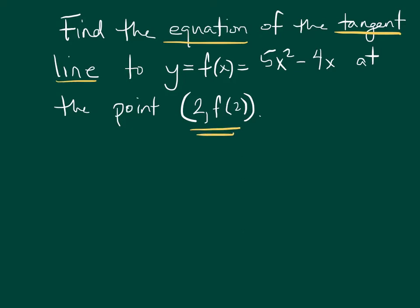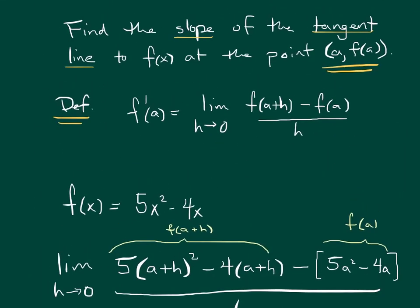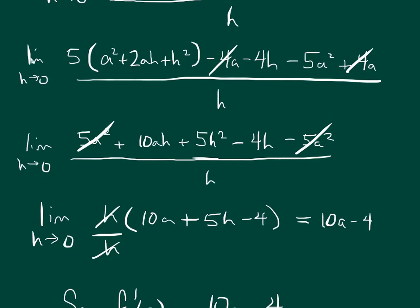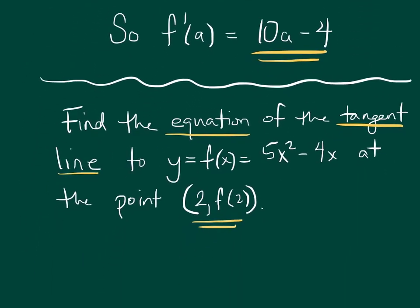Now, if you remember what we just did in the previous video, we've got all this calculation above us. Earlier we were asked to find the slope of the tangent line. We did this whole let h go to zero mess. And then at the end of the day, we actually have a formula right here for the slope of the tangent line. f prime of a equals 10a minus 4. That means that we need to use this formula to find the slope of this line that we're looking for.